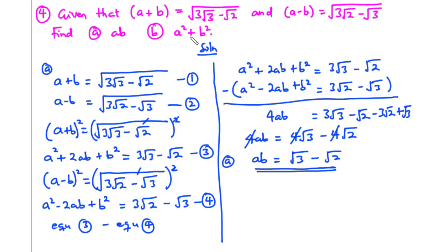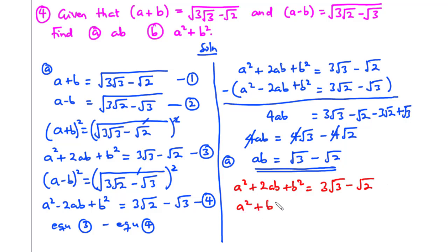Now let's solve for a squared plus b squared. From equation 3 we have a squared plus 2ab plus b squared equals 3 root 3 minus root 2. Transposing 2ab to the right hand side, we have a squared plus b squared equals 3 root 3 minus root 2 minus 2ab. Since we know the value for ab, we are going to substitute it into this equation.